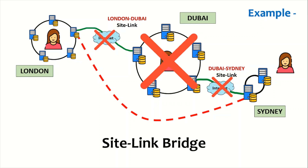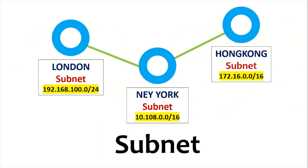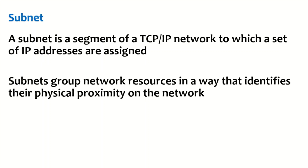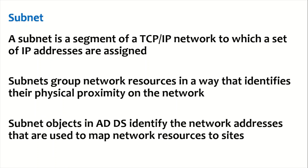A subnet is a segment of a TCP/IP network to which a set of IP addresses are assigned. Subnets group network resources in a way that identifies their physical proximity on the network. Subnet objects in Active Directory Domain Services identify the network addresses used to map network resources to sites. Every site will have its own subnet, or it can have more than one subnet.